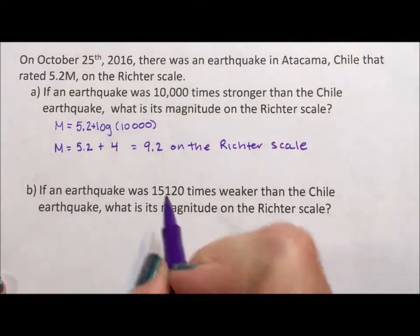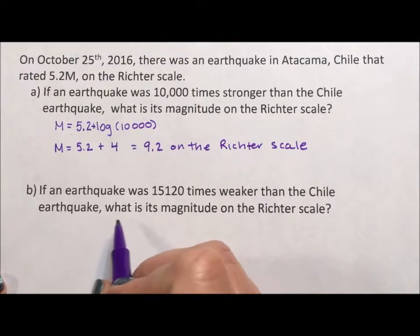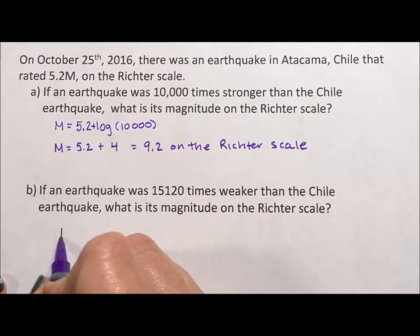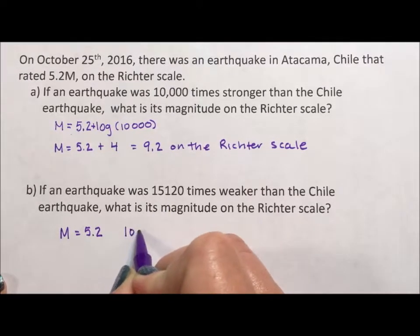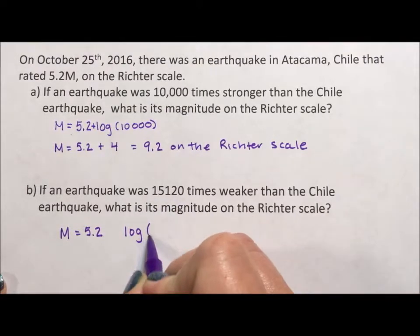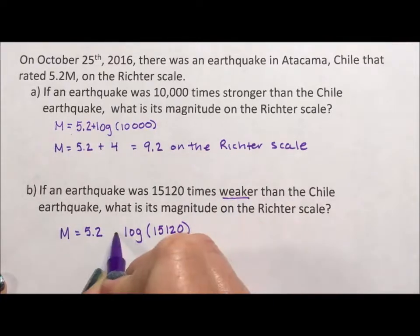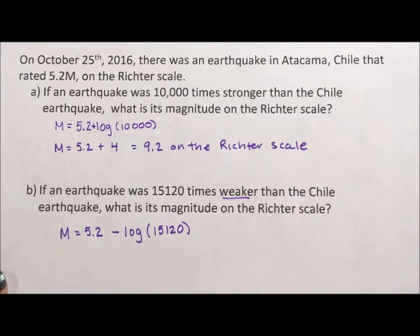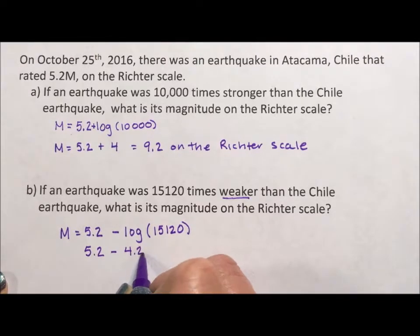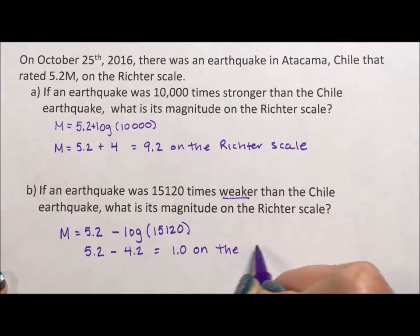If an earthquake was 15,120 times weaker than the Chile earthquake, what is the magnitude on the Richter scale? We start with 5.2, and again we take the log of the relative number — 15,120. Because it's weaker, we are subtracting. Since 15,120 is not a power of 10, we use the calculator, and we get 5.2 minus 4.2, which gives us 1.0 on the Richter scale.